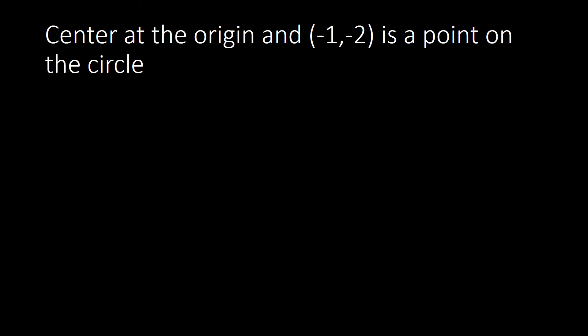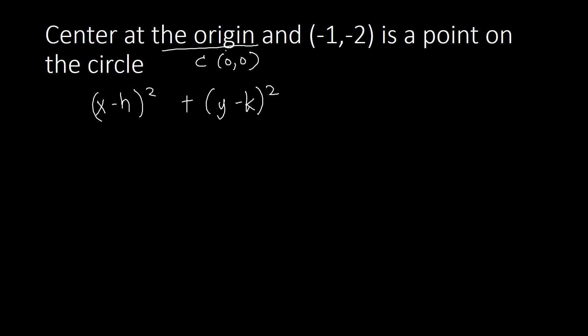Let's go to another example. You can pause the video and try it yourself before resuming. Again, the standard equation format is (x minus h) squared plus (y minus k) squared equals r squared. The center is at the origin, so h equals 0 and k equals 0, giving x minus 0 squared plus y minus 0 squared equals r squared.